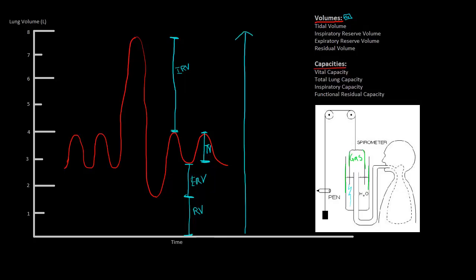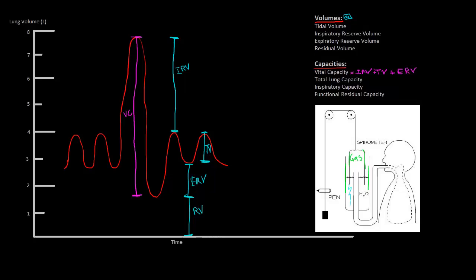Let's talk about the capacities. The vital capacity is the maximum amount of air a person can expel after maximum inhalation — this span here is our vital capacity, labeled VC. Looking at our volumes, vital capacity is the summation of the inspiratory reserve volume, the tidal volume, and the expiratory reserve volume. Total lung capacity, as the name implies, is all that the lung can hold — labeled TLC — and using our volumes we can see that's the summation of all four volumes.